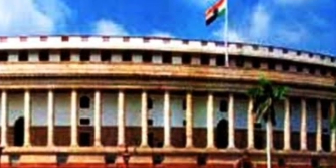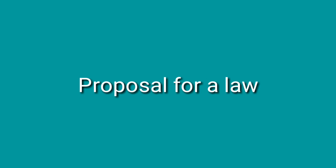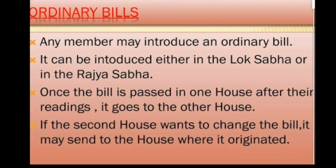Mainly there are two types of bills: ordinary bills and money bills. The proposal for a law is called a bill. Bills are of two types: money bills and ordinary bills. If a bill is related to income or expenditure, it is called a money bill. If it is not related to income or expenditure, it is called an ordinary bill.